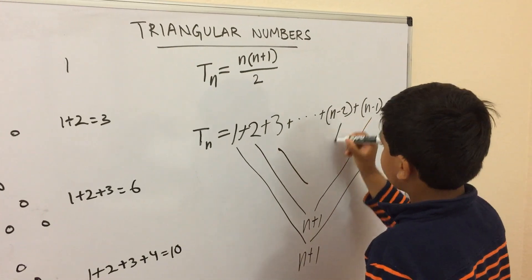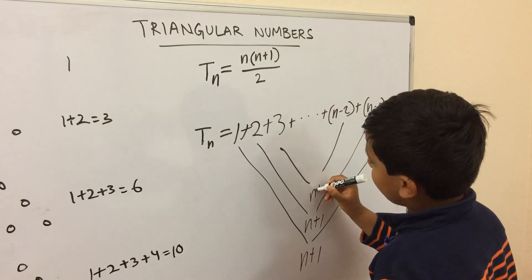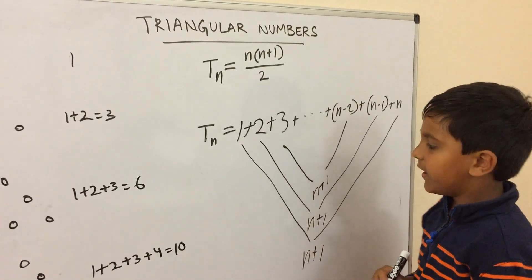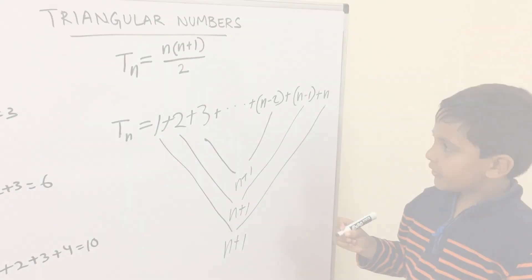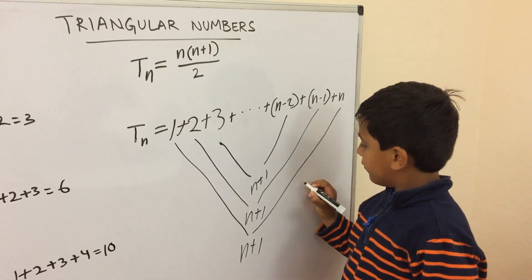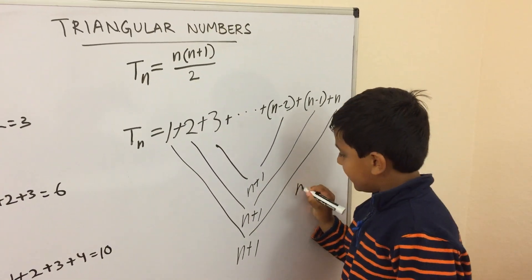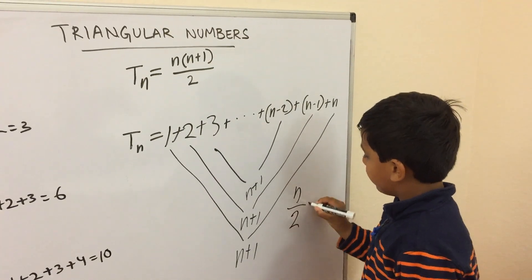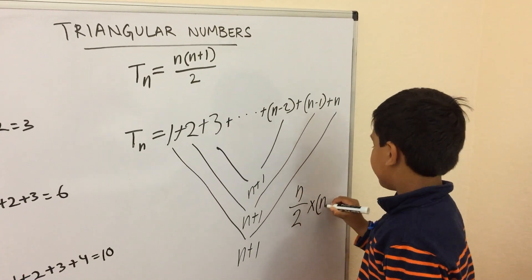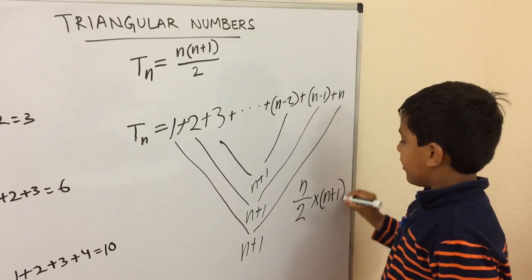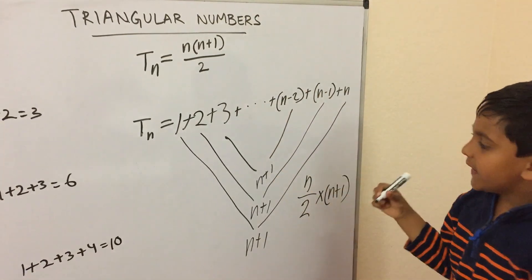Third and third to last numbers we're going to add those. We still get n plus 1, but how many pairs of n plus 1? So there's n over 2 groups of n plus 1 when n is even. So n over 2 groups of n plus 1 which is n over 2 times n plus 1, which is our formula up there.